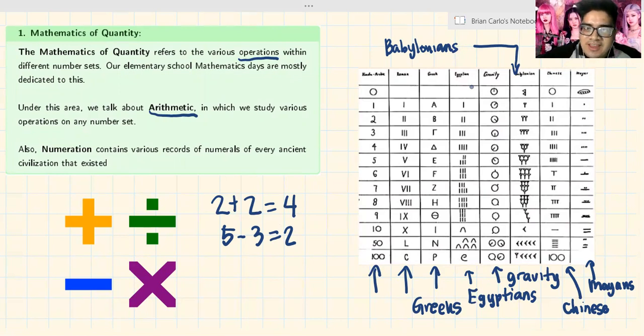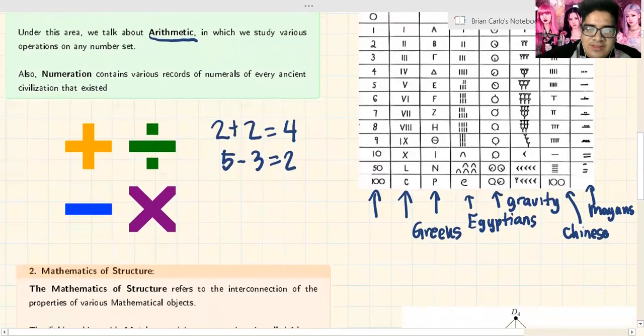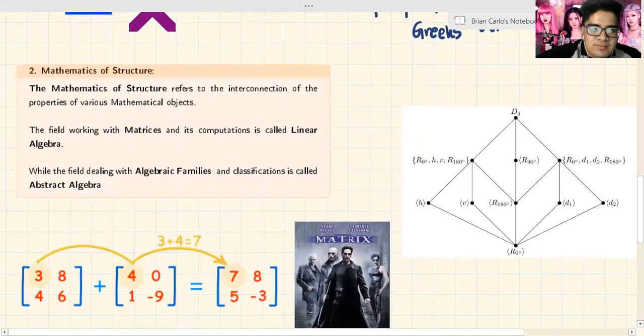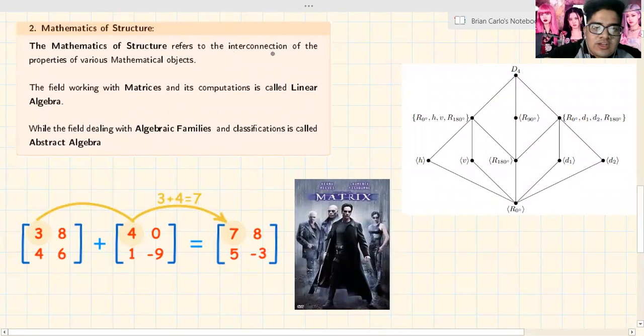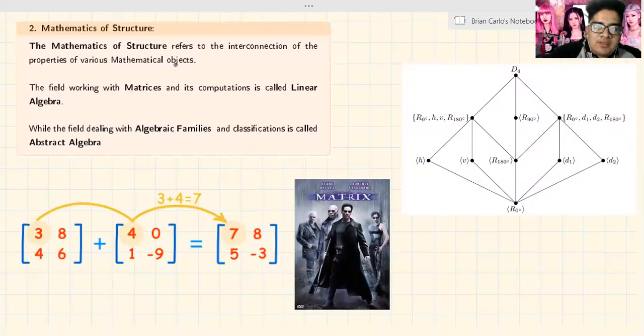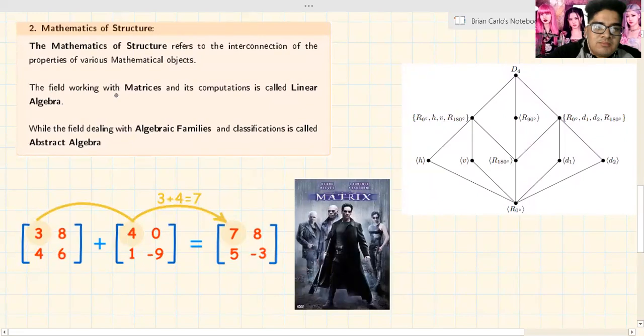Let's carry on. Number two, the mathematics of structure. The mathematics of structure refers to the interconnection of the properties of various mathematical objects. It builds up interconnections. The field working with matrices and its computations is called linear algebra.